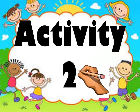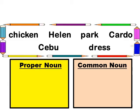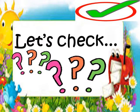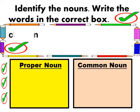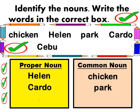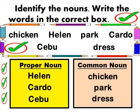Now let's try to answer activity number 2. Are you ready? Identify the nouns and write the words in the correct box: Chicken, Helen, Park, Cardo, Cebu, Dress — whether they belong to proper noun or common noun. I know this is easy. Let's check your answer. Remember, proper noun begins with a capital letter. Common noun does not begin with a capital letter.